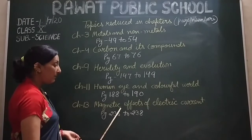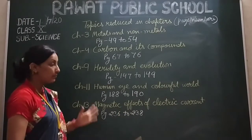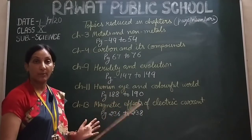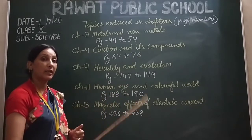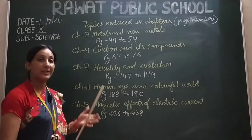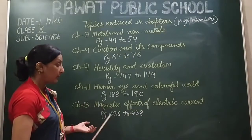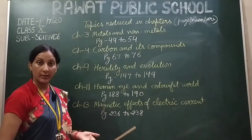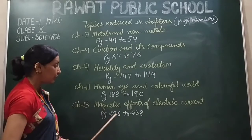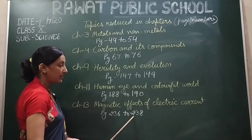Chapter 13, Magnetic Effects of Electric Current — motor, induced current, electric generator, AC current, DC current, and domestic circuit do not need to be read: pages 236 to 238.